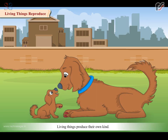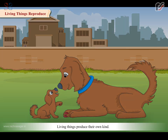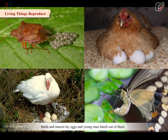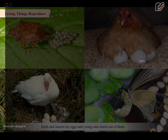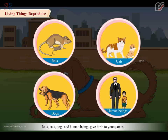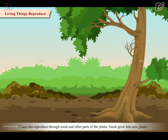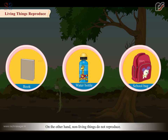Living things produce their own kind. Birds and insects lay eggs and young ones hatch out of them. Rats, cats, dogs and human beings give birth to young ones. Plants also reproduce through seeds and other parts of the plant. Seeds grow into new plants. On the other hand, non-living things do not reproduce.